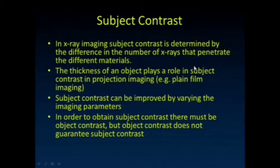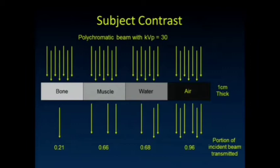So what about subject contrast? Now we're going to irradiate that object, and how much signal is produced by those tissues, or how much do those tissues attenuate the X-ray beam? Here's those same tissues, and we've now irradiated it with a polychromatic X-ray beam, KVP equal to 30. And here's the percentage of the X-rays that would make it through one centimeter of bone, muscle, water, and air. Notice the difference here, 0.66 and 0.68. These are still very close to each other.